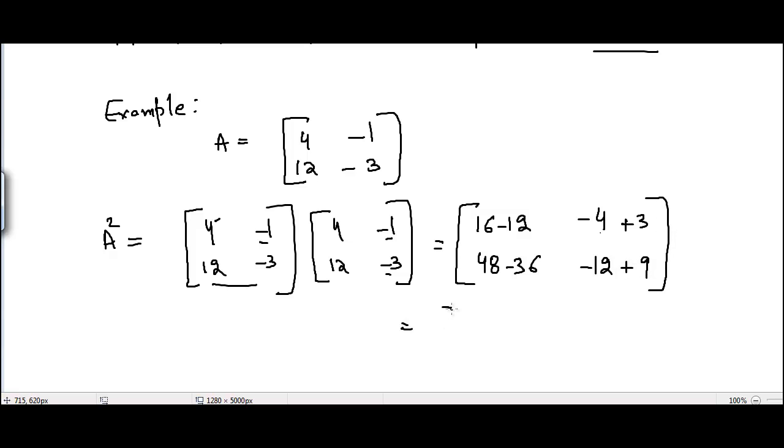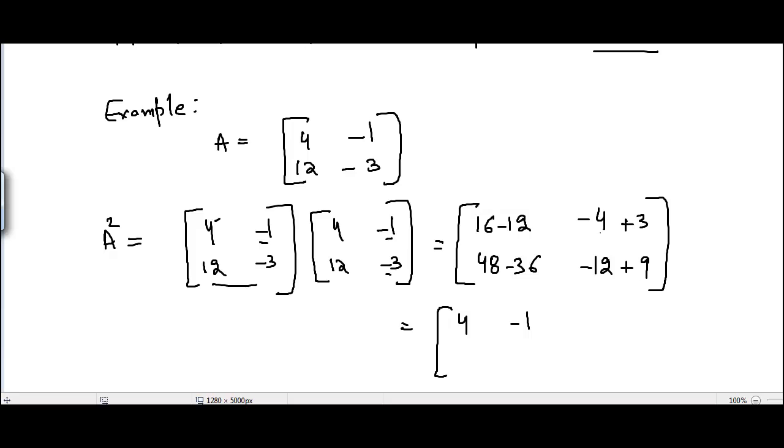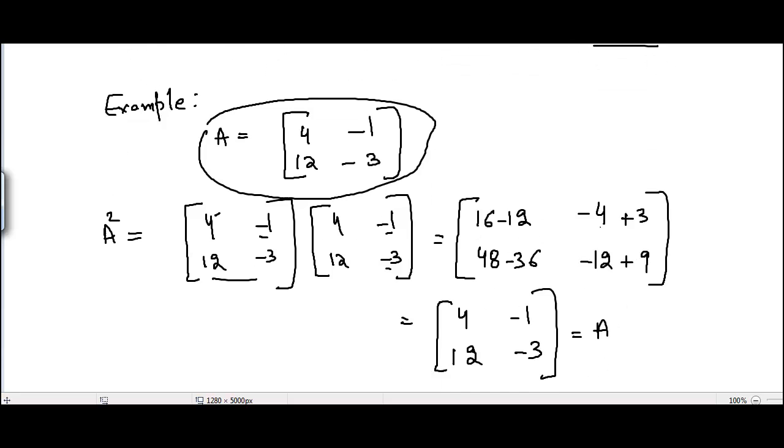So it becomes 16 minus 12 is 4, and -4 plus 3 is -1. 48 minus 36 is 12, and -12 plus 9 is -3. So it is equal to matrix A itself. Therefore, we can say that the example we have considered here, A equal to [4, -1; 12, -3], this matrix is called idempotent.